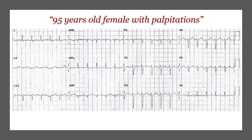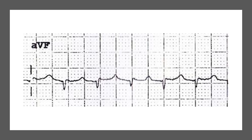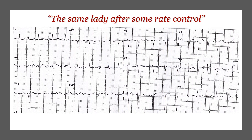Here is another example of the Bix rule from our Facebook page. This was a 95-year-old lady who presented with palpitations. It was difficult to say whether this was atrial flutter or SVT — just a narrow complex regular tachycardia. But if you look carefully, there is what looks like a P wave just in the middle between two complexes. According to the Bix rule, there may be hidden P waves in the complexes before and after. After rate controlling this lady, we could clearly see the flutter waves — confirming this was also atrial flutter.